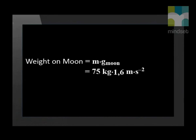We find that the astronaut's weight on the moon is 120 newtons. That is why astronauts can jump higher on the moon using the same energy — because the gravitational acceleration is less on the moon compared to the earth. The same astronaut weighs 120 newtons on the moon and 735 newtons on earth.